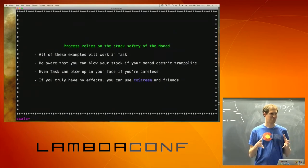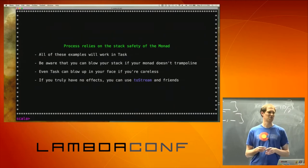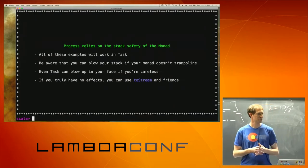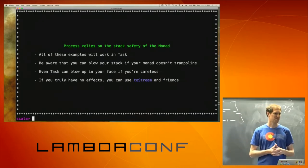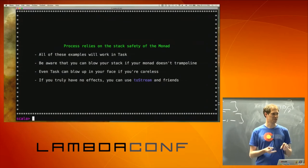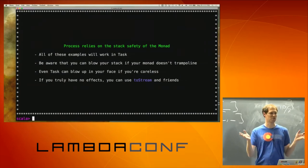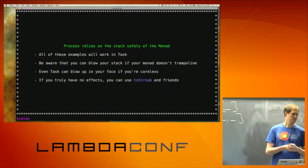If you don't have any effects at all — like Process Zero — there are some methods applicable to it like toStream, toList, toVector, where you basically can just produce the values and that runs it for you.